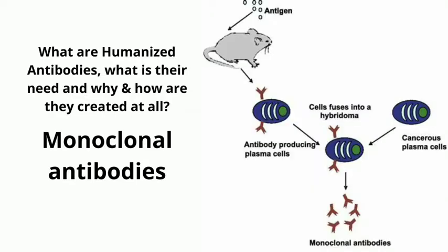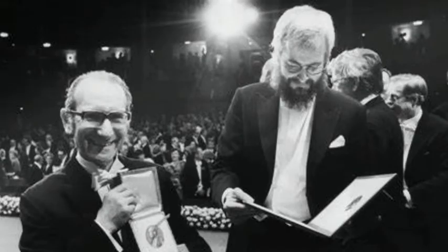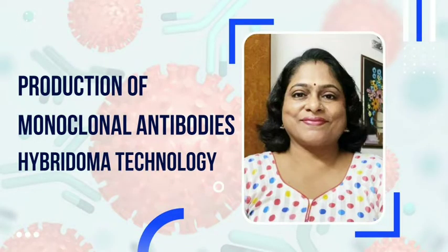Hello students. What are humanized antibodies? What is their need, and how are they created? These are useful derivatives of monoclonal antibodies, which are synthesized in vitro by hybridoma technology devised by famous Nobel laureates Kohler and Milstein. You may watch a short video on this technology by clicking the link given in the description box.